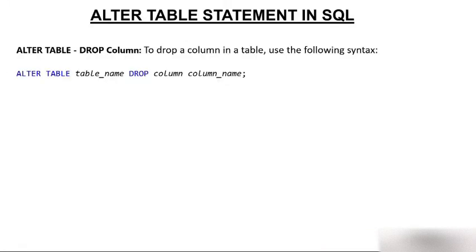Now if you want to drop a column — suppose your table has a few columns and you find one is not useful and want to remove it — you use ALTER TABLE DROP COLUMN. The syntax is: ALTER TABLE, then table name, then DROP COLUMN, then the column name. Note that you need to explicitly use the keyword COLUMN here, unlike with ADD or MODIFY.